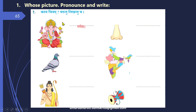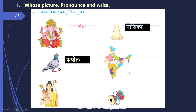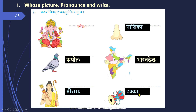First question: Kasya Chitram Vadantu Likhantu Cha — Whose picture is this? Pronounce and write the names. We have Lord Ganesha here — Ganesha Ha. Next, this is a nose — Nasika. We have a pigeon — Kapotaha. Those of you who know Hindi know that pigeon is called Kabutar in Hindi. So Kapotaha becomes Kabutar in Hindi. This is our country — Bharata Deshaha. Next, Shri Ramaha. Next, Dhakka.